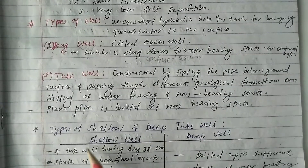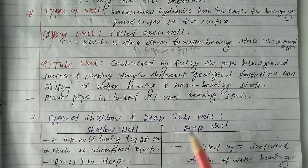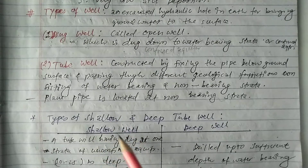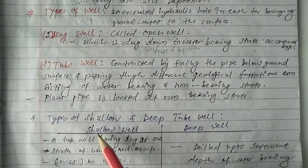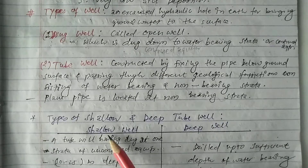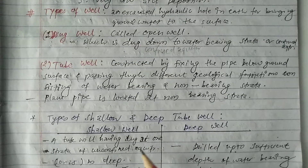Now let's look at the types of tubewells: shallow and deep. The basic difference is: for a shallow tubewell, the strata is in an unconfined aquifer, whereas for a deep tubewell, the strata may not be an unconfined aquifer.